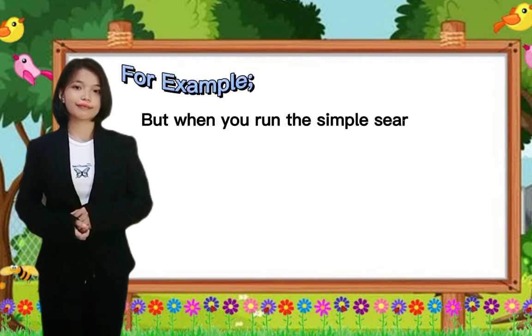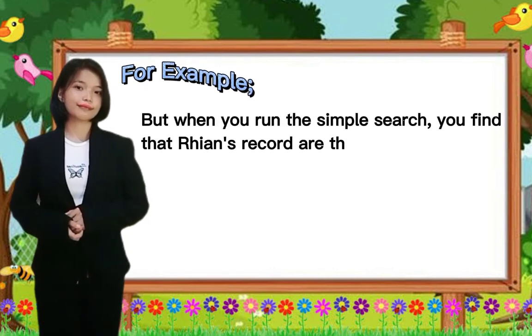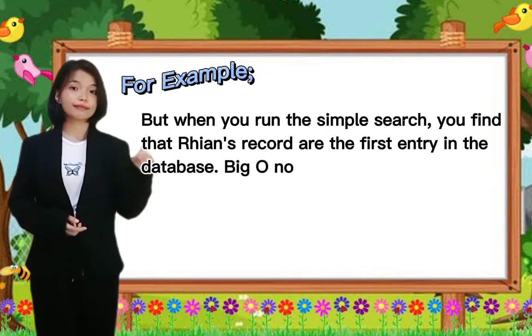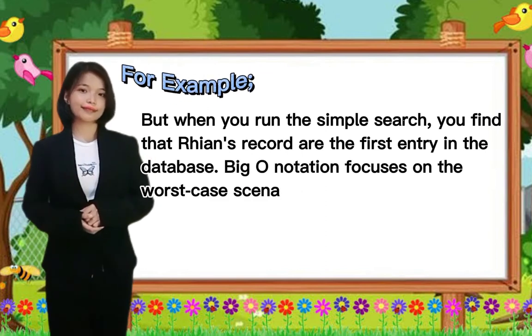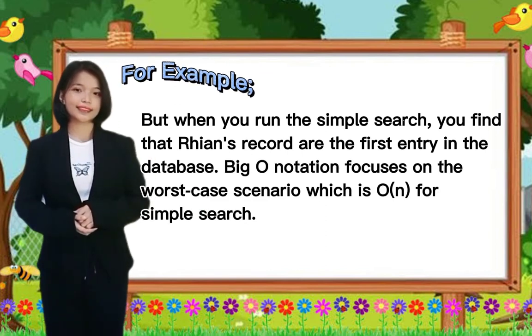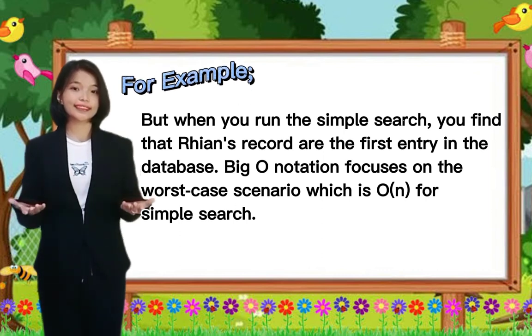But when you run the simple search, you find that Rian's records are the first entry in the database. Big O notation focuses on the worst case scenario, which is big O of n for simple search.